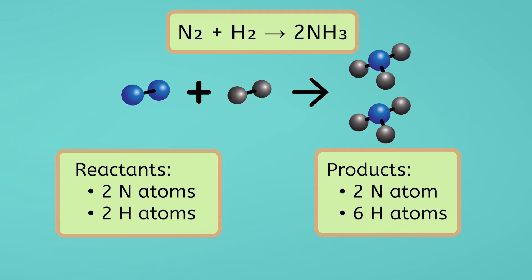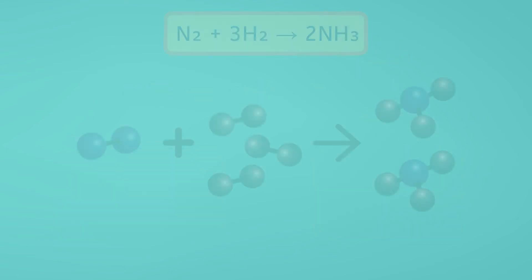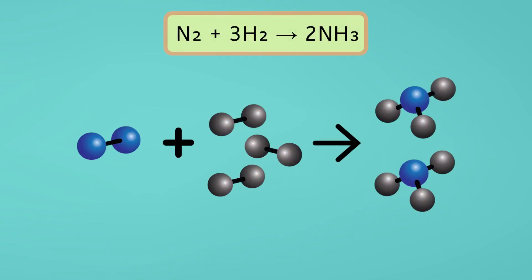Our nitrogen atoms match, but what about our hydrogen atoms? Oh no, now they don't match. Any ideas of what we can do? We can place a three in front of the H2 in the reactants. By placing a three there, we have three of those molecules, giving us a total of six hydrogen atoms in our reactants to match our six hydrogen atoms in the products.